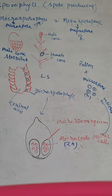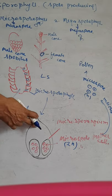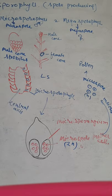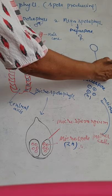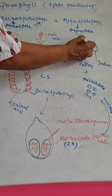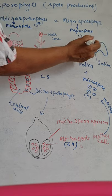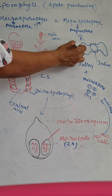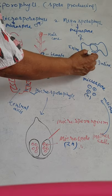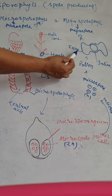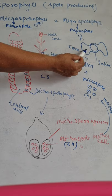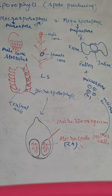The pollen grain of Pinus is a two-wall structure. It has two walls: the inner one is the intine and the outer one is the exine. The exine forms the wings on the pollen grain.